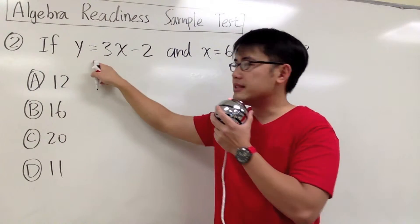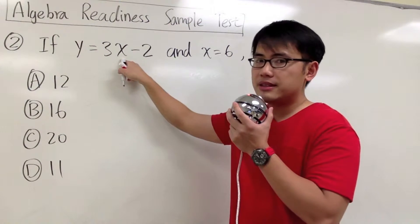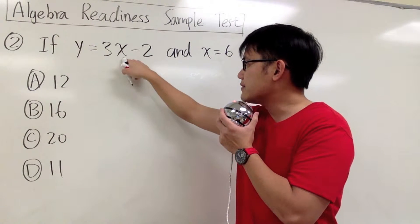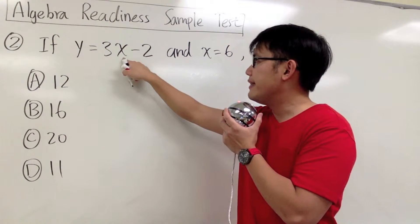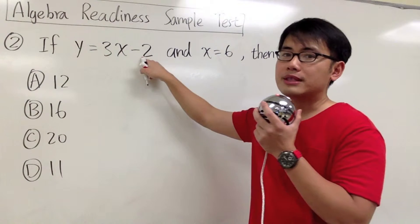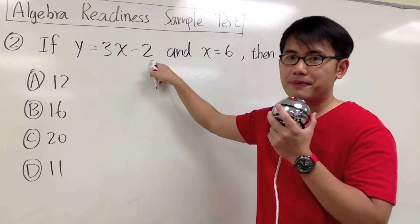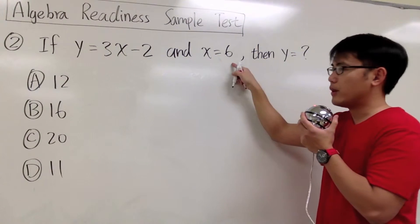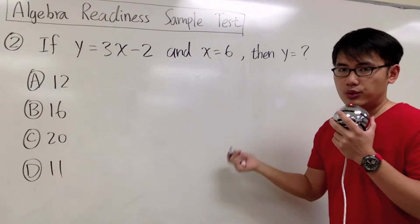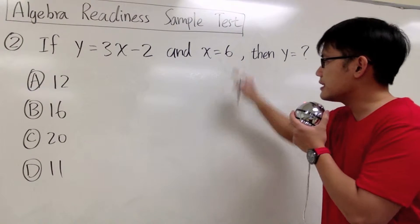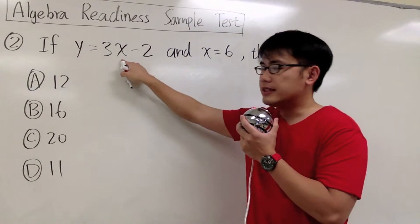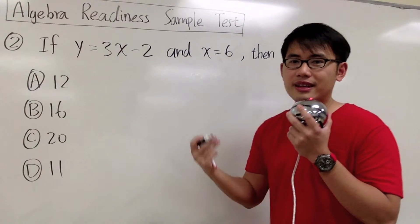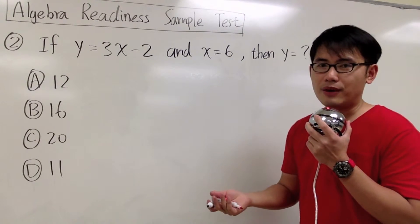y is equal to 3x, which means we have 3 times the x value, and then we have to subtract 2 from there. We also know the x value, so we just need to plug in 6 into x and then do the computation. That's how we can get the y value.